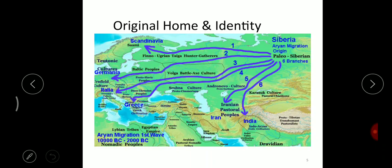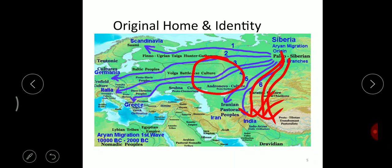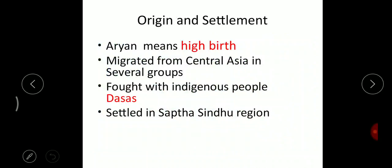Regarding origin, the people came from above — from Siberia or present-day Russia. Some theories say these people came down from Russia; others say they came from Central Asia. These people came from the northernmost part of the hemisphere to India, and they named themselves as Aryans. Aryans means of high birth.